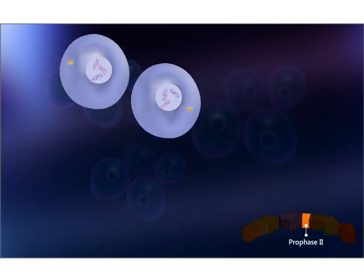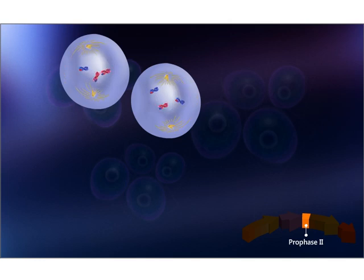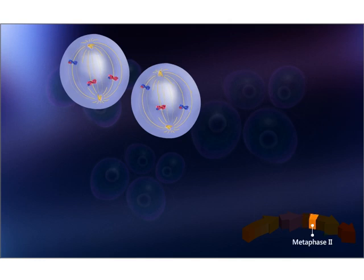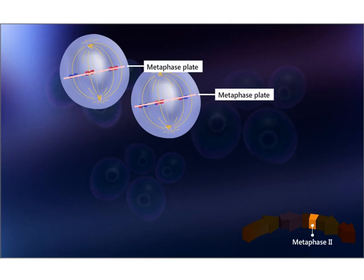During prophase two, centrioles again change to asters and spindle fibers are formed. The nucleolus and nuclear membrane disappear, and chromatin networks change to chromatids. In prophase two, asters move to opposite poles of the cell. In metaphase two, sister chromatids are attached to the spindle fibers at the centromere, and the spindle fibers align the sister chromatids along the metaphase plate.